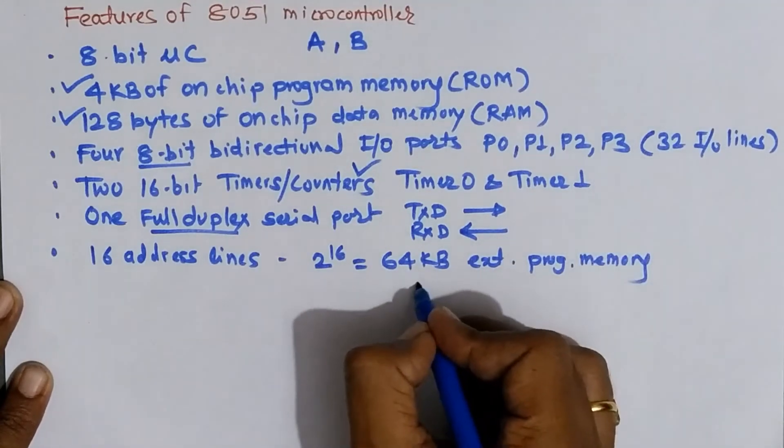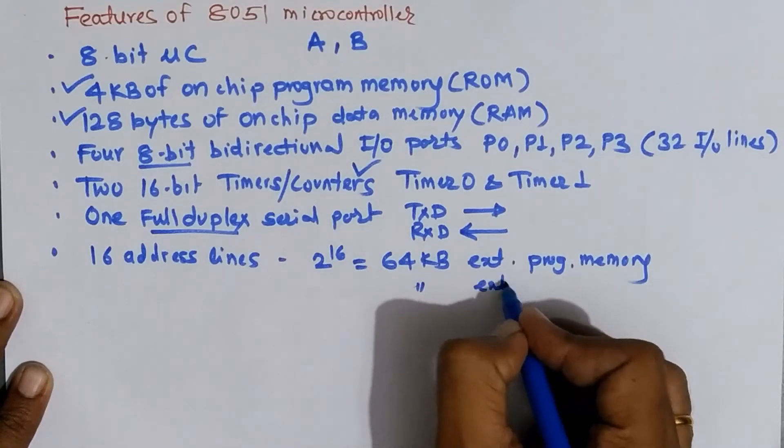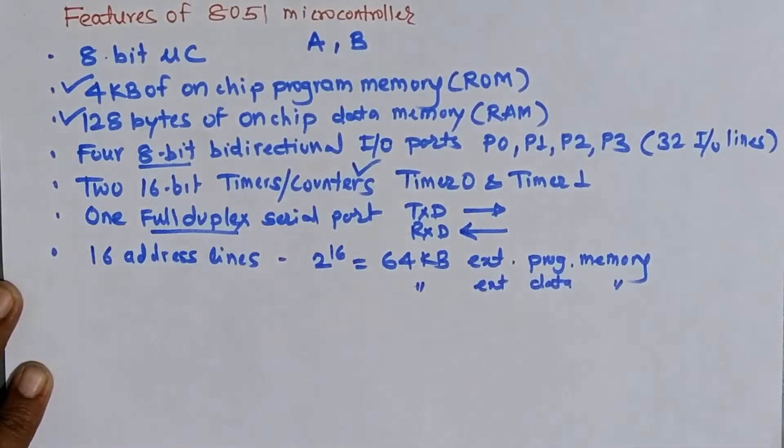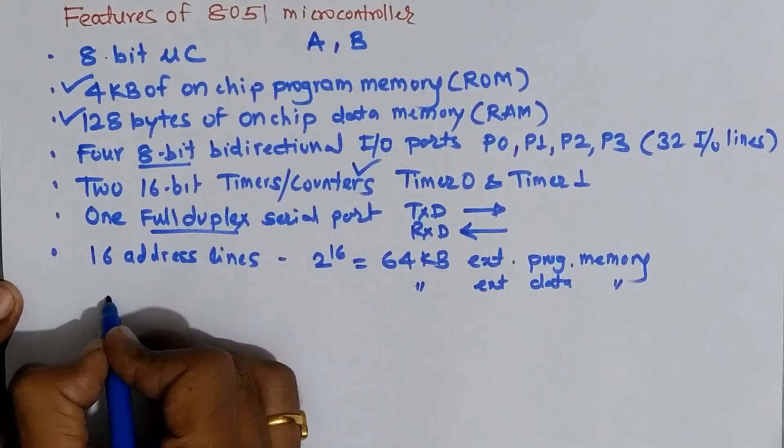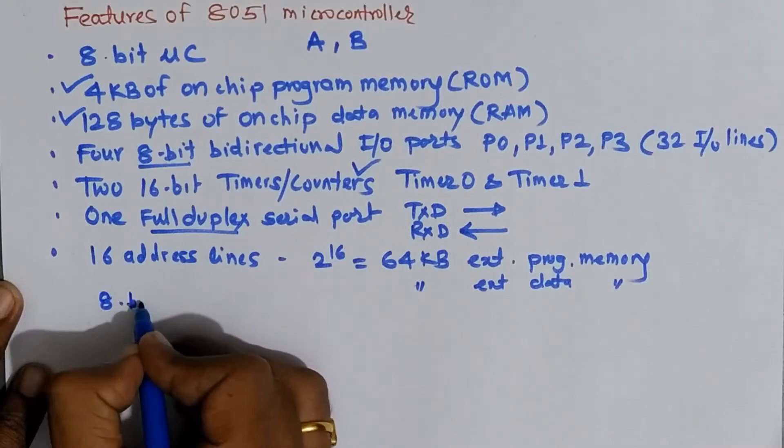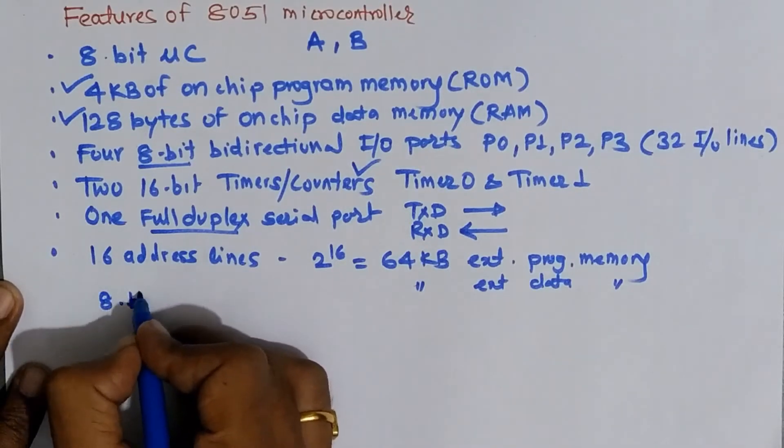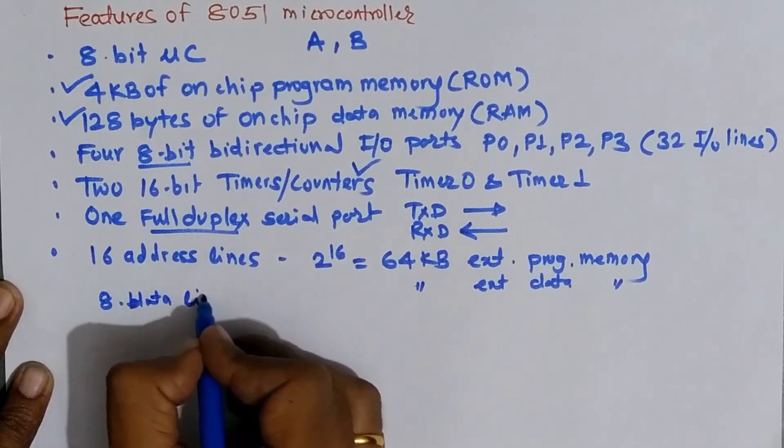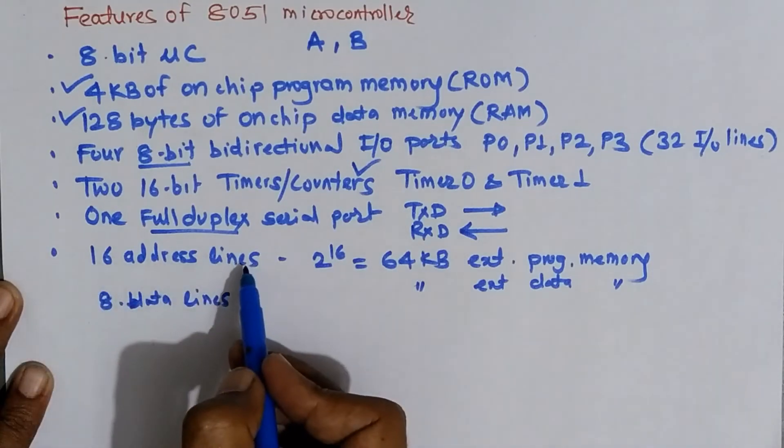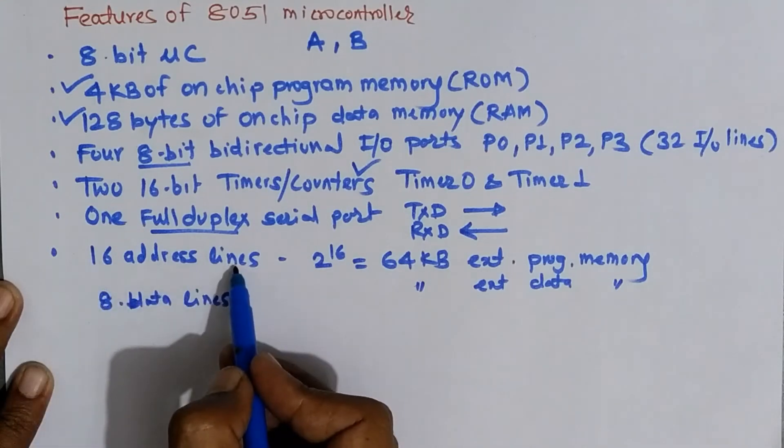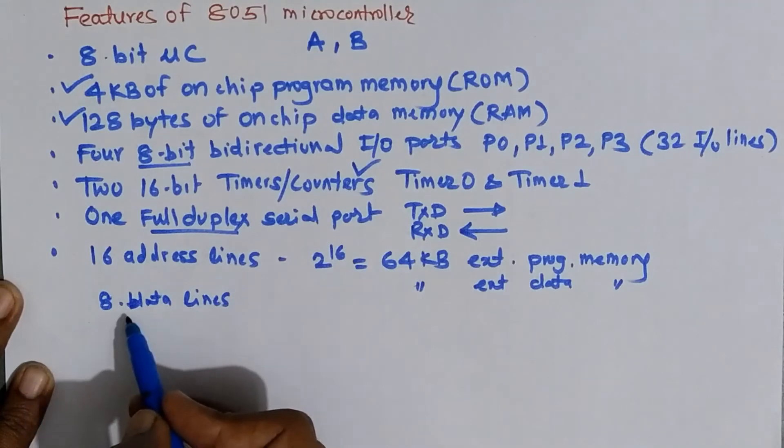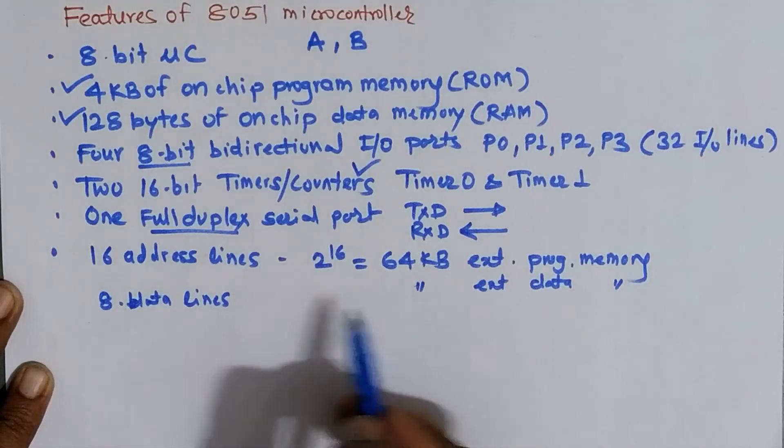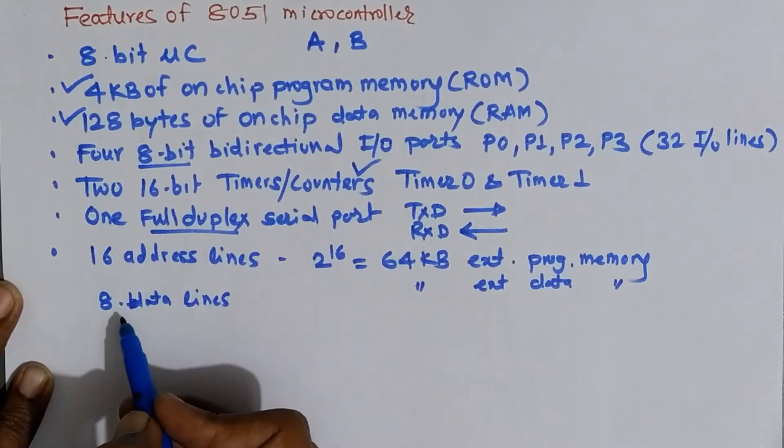Similarly 64 kilobytes of external data memory can be interfaced with microcontroller. For interfacing external memory we require address lines and to carry the data we require data line. So 8 data lines are also there and these lines are called as buses. Set of wire is nothing but bus. So 16 address lines decides the amount of memory and to carry the data to and from this external memory we require data bus. So 8 data lines are there.